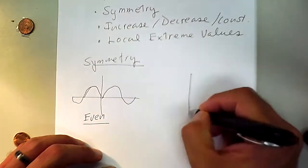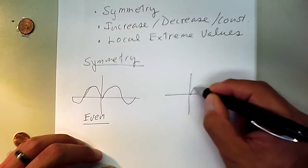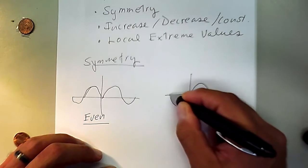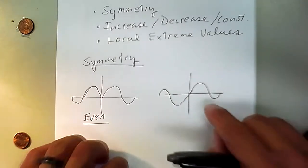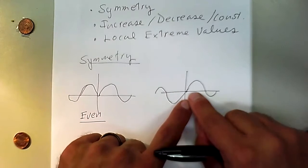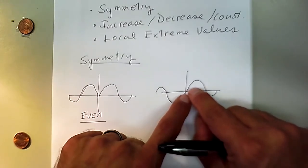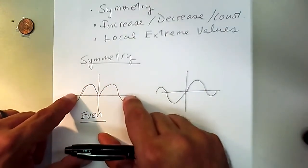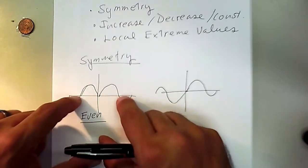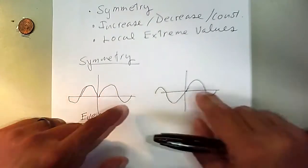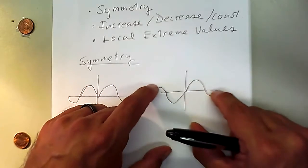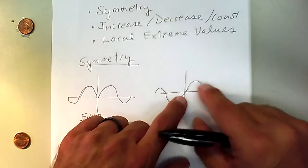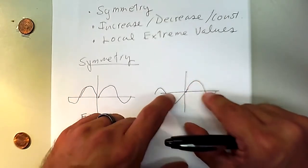On the other hand, if a graph is reflected over the origin, it would look like this. This almost doesn't look symmetric, but it is in the sense that the pattern on the left and on the right is the same — see my fingers, how they move in the same way. Here they move opposite, but it is still symmetric in the same kind of way.